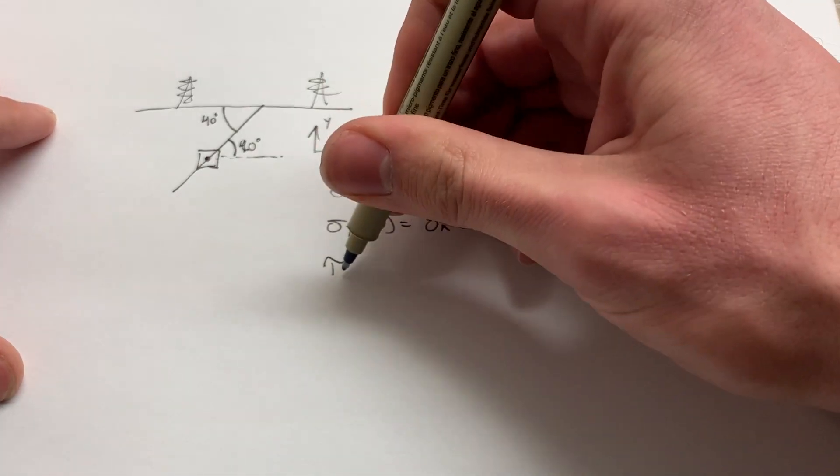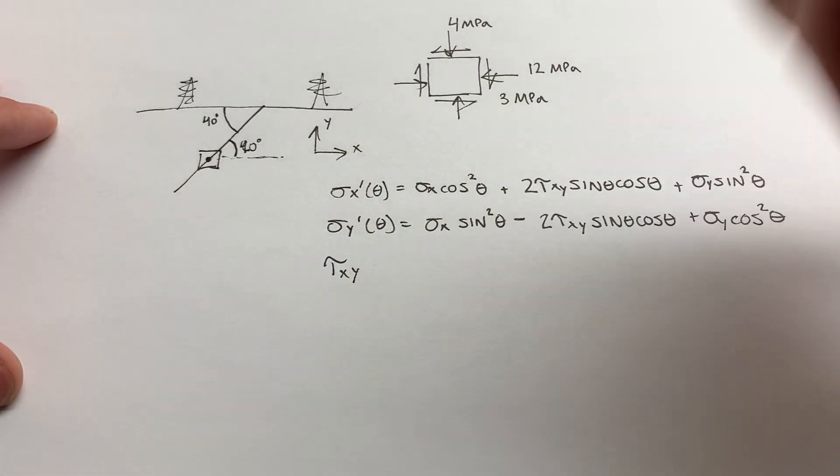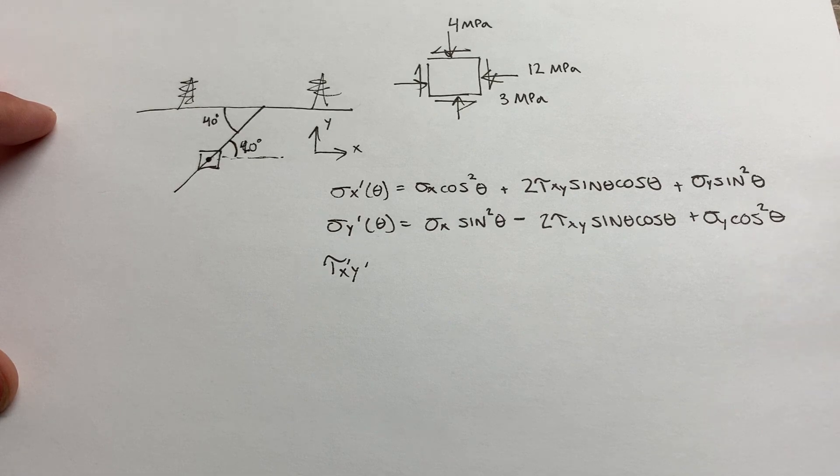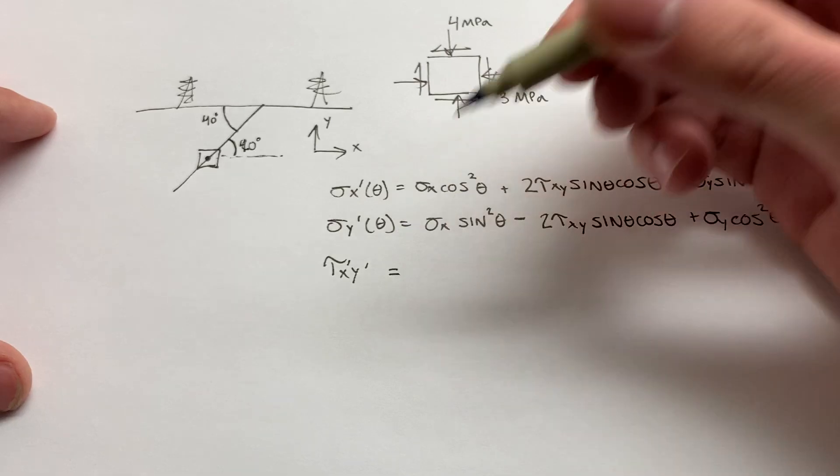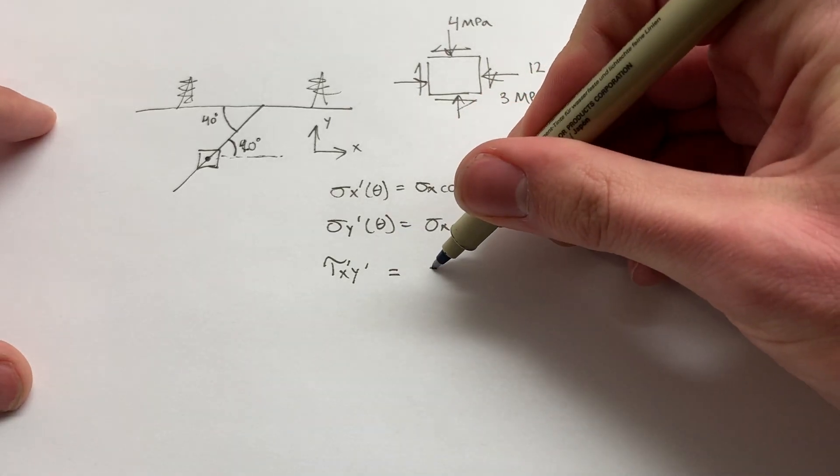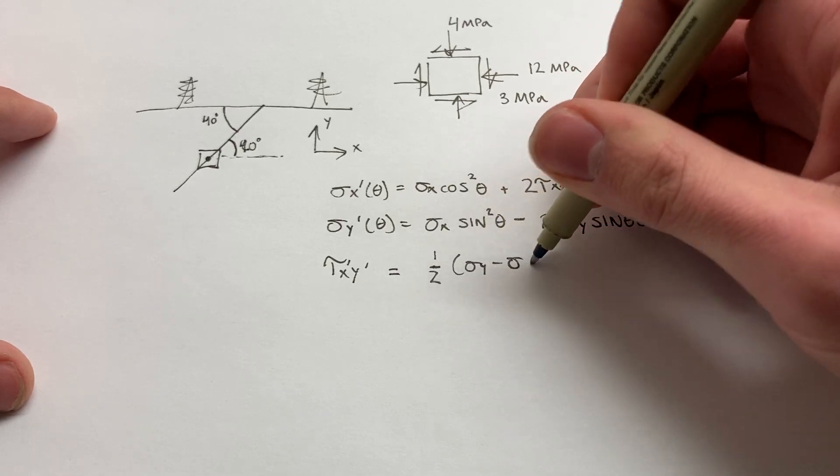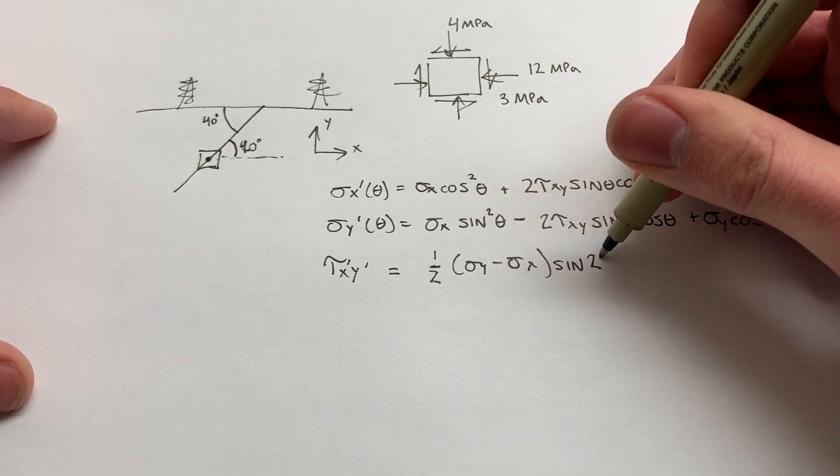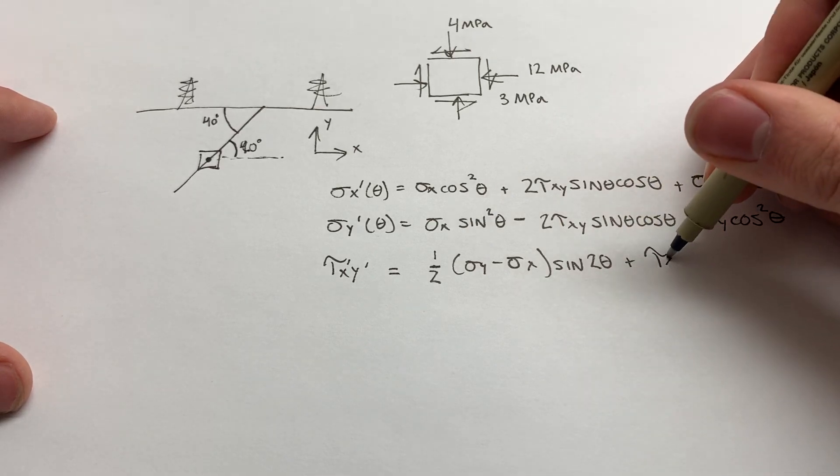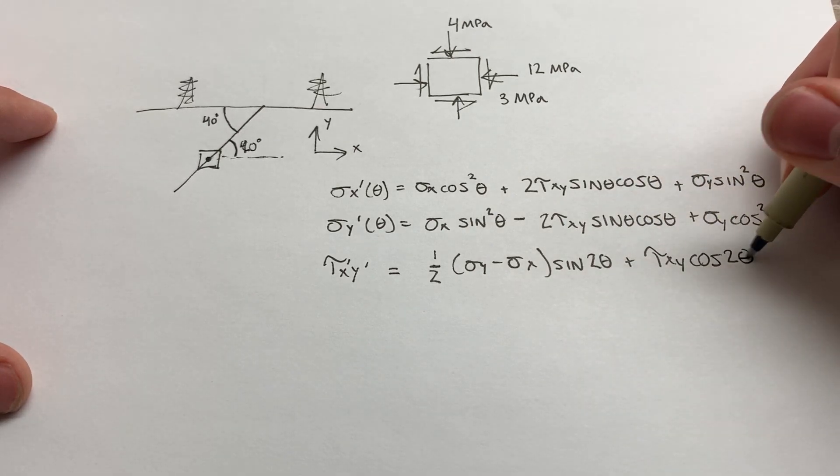And finally, we can get the shear stress at this rotated location. We're finding tau X prime Y prime. I should have mentioned that tau XY is equal in magnitude to tau YX. The directions will be different. The exact plane they're acting on is different. But the magnitudes will always be the same. And that's going to be equal to 1 half sigma Y minus sigma X sine 2 theta plus tau XY cosine 2 theta.